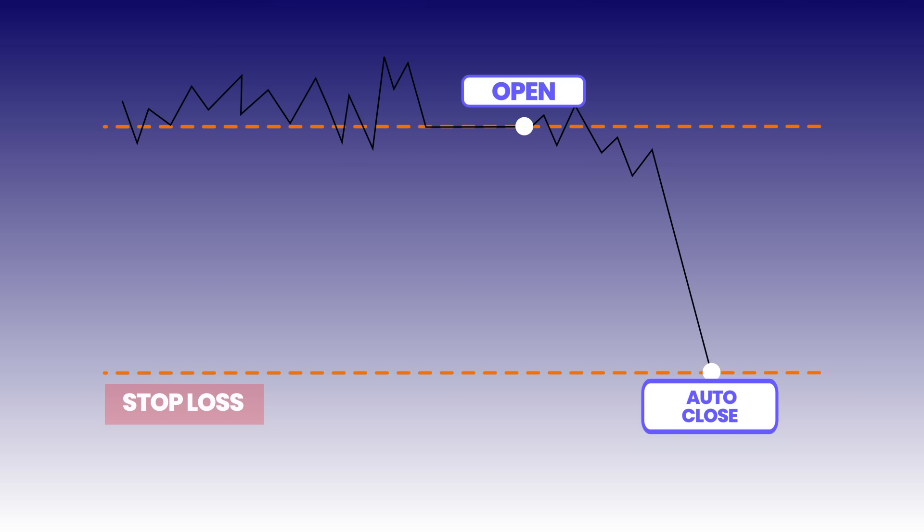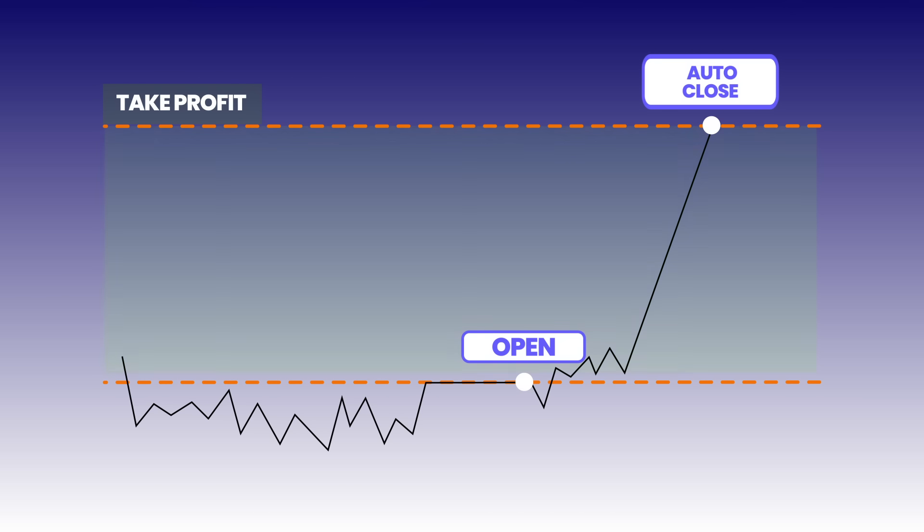Now let's take a look at the stop losses and the take profits, which are essential tools for managing your risk and profits. The stop loss is a predefined level where your trade will get closed automatically if, for example, the market goes against you. It's like a safety net to limit your risk and prevent further losses. The take profit is a predefined level where your trade will also get closed automatically in case the market moves in your favor — that way it will lock in your profits.